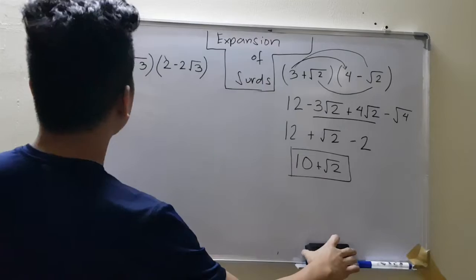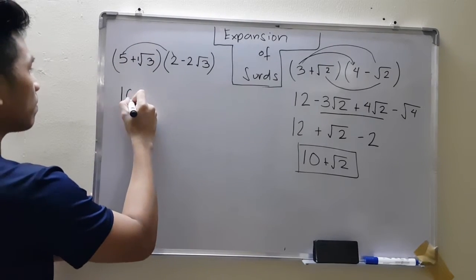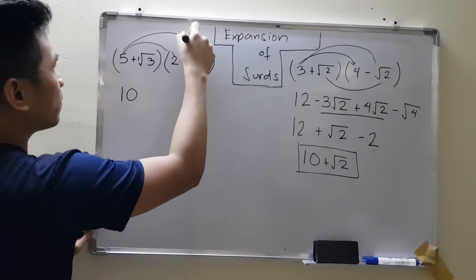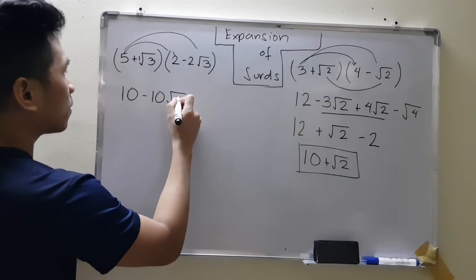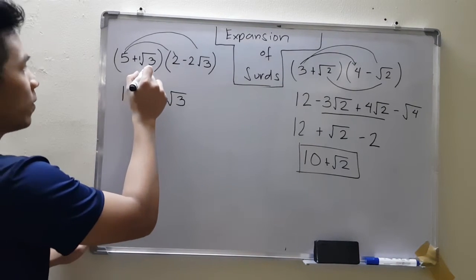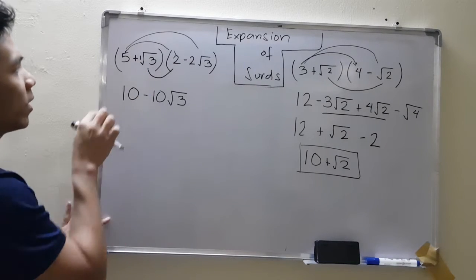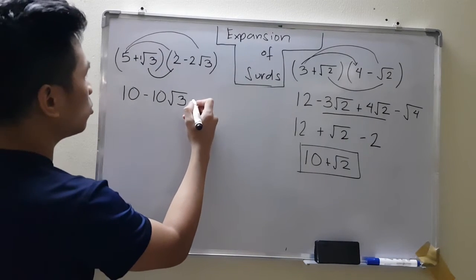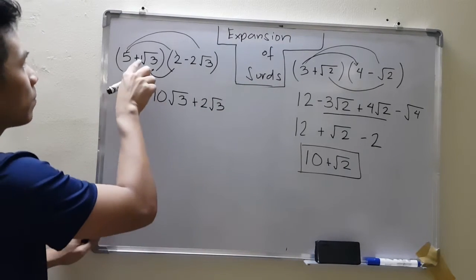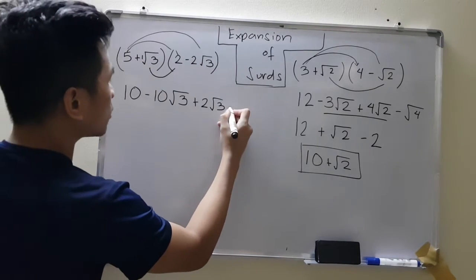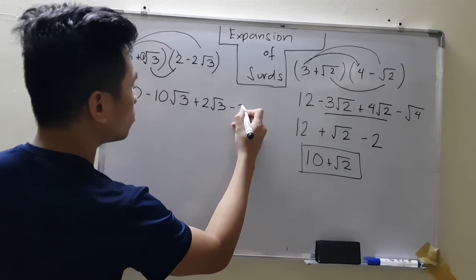Let's have another example — we're going to expand this one. 5 times 2 gives 10. Then 5 times negative 2 root 3: only multiply 5 by the 2 outside, giving negative 10 root 3. Next, root 3 times 2 — remember there's always a 1 in front of root 3, so 1 times 2 is just 2, giving positive 2 root 3. Then 1 times the next term, positive times negative, so place the negative sign first. 1 times 2 gives 2.